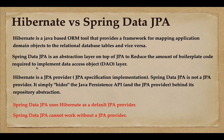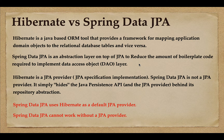Spring Data JPA is an abstraction layer on top of JPA to reduce boilerplate code required to implement the DAO layer. The Spring framework provides the Spring Data JPA module, which minimizes boilerplate code significantly. We just need to extend the repository interfaces provided by Spring Data JPA, and we get full CRUD operations out of the box.